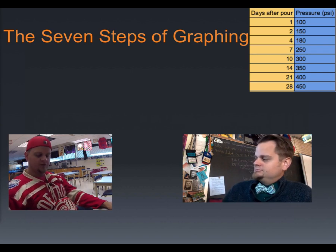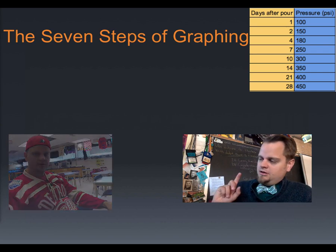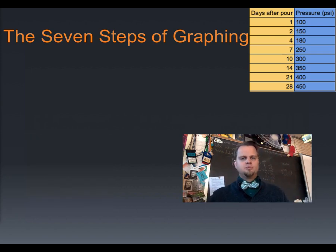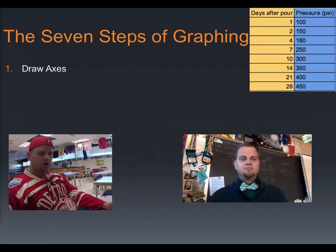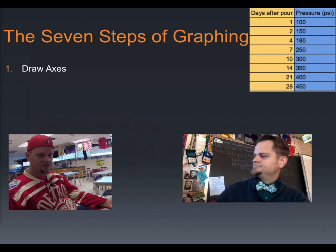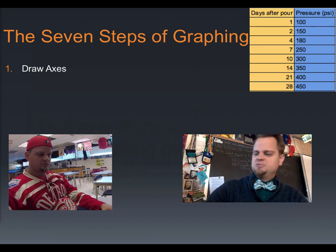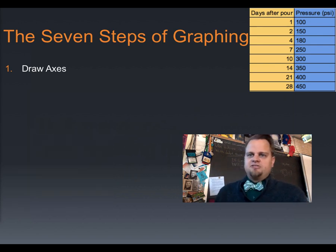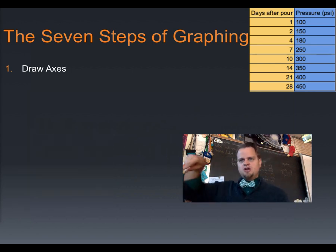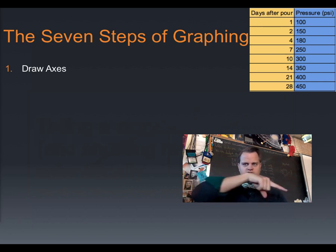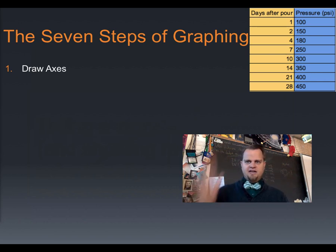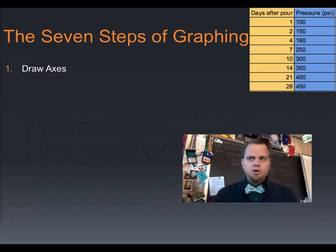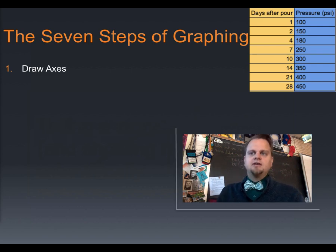What's step one? Draw the axes. You'd be surprised how many simple things need to have a specific step. You have your x-axis, which goes left-right, and your y-axis, which goes up-down. Straight lines, perpendicular, right there.